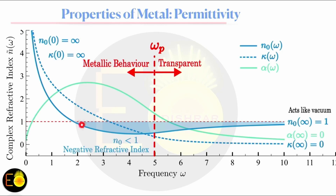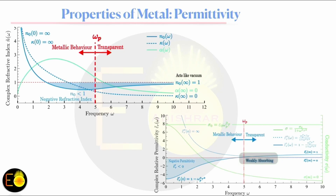One significant observation: within a certain frequency region just above the plasma frequency, the refractive index becomes less than one. By definition, refractive index is the ratio of the speed of light in free space to the speed of light in the medium, so normally it should be greater than one. A refractive index less than one means light propagates faster than in free space within the metal — a very exciting phenomenon. This is the basis for metamaterials and invisible cloaking, which will be discussed later.